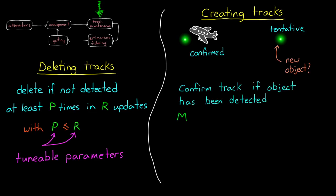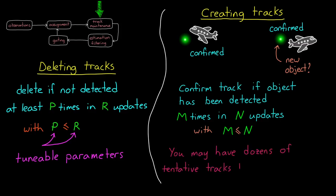Once the tentative track has been detected M times in the last N updates, then you move that track to confirmed, which means that you think it is a real object. And we can remove a tentative track with the same logic as removing a confirmed track. So in this way, you may have dozens of tentative tracks that you are maintaining due to false positive measurements, but are deleting before they ever become confirmed.